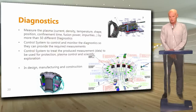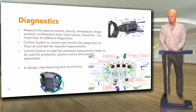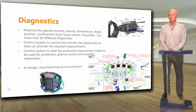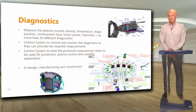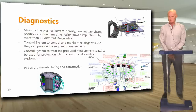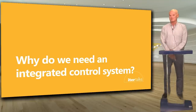Finally, we need diagnostics to measure plasma parameters like current, density, temperature and so on. In fact there are more than 50 different diagnostics spread around the vacuum vessel. The control system controls and monitors the diagnostics so they can provide the required measurements, and also processes those measurements so they can be used for protection, plasma control and scientific exploration. For full performance, further systems are needed not included in this talk — in particular the tritium plant and the radioactive waste facility.